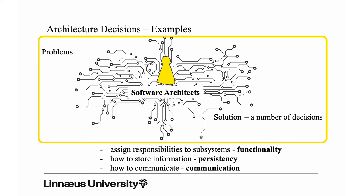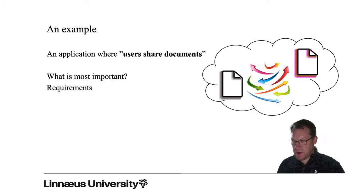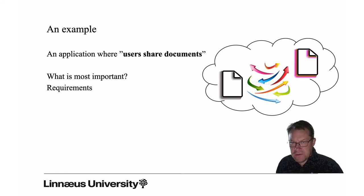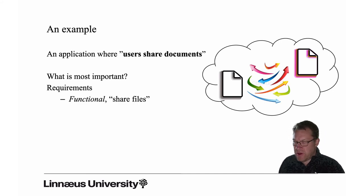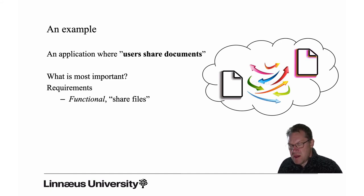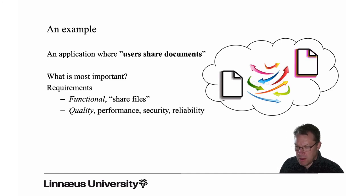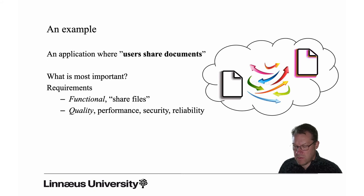Here is a simple application example: users can share documents. What are the most important requirements for this application? We have functionality — like share files — where users should be able to share files. But then we also have all these quality requirements as well: performance, security, reliability, etc. It turns out that these quality requirements are really tougher than most of the functional ones.